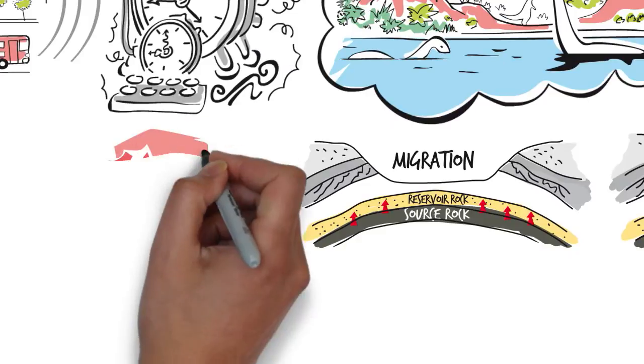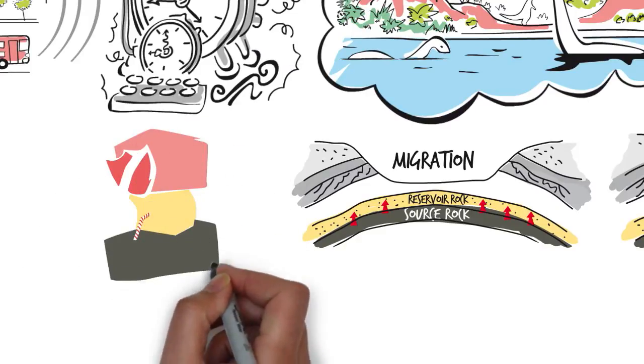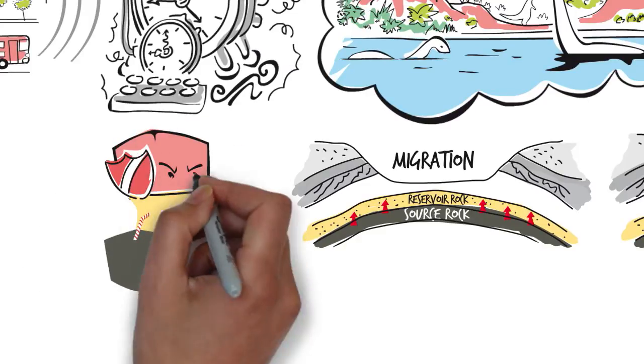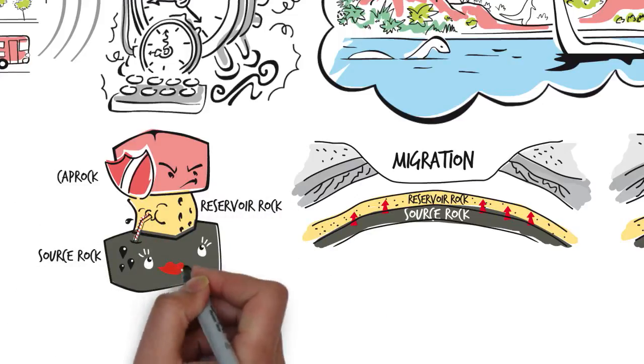But apart from that, the cap rock is required to allow the hydrocarbons to accumulate in the subsurface and prevent them from migrating to the surface.